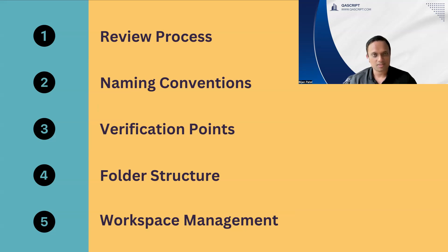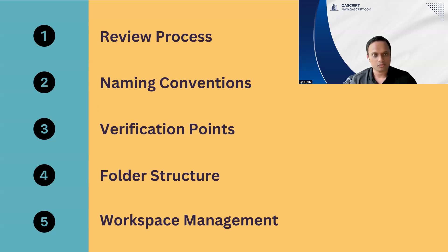How you implement this review process depends completely on your team and your project, but you can use something called the 4i check. Basically, you can create different folders and assign different reviewers when your script is under different stages. Initially, you will start working on your test cases, so it will be in progress. Once completed, you put it in a different folder where you can ask your reviewer to review your test cases — this could be an 'in review' folder. Once reviewed and finalized, with all corrections and improvements done, they can be moved into the master folders. This three-layered folder structure can improve your review process and ensure you are always reviewing the code or test cases being merged into your master repository.